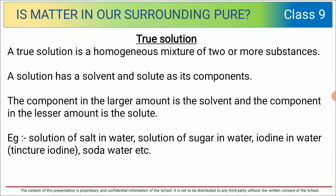Now let us talk about the true solution. A true solution is a homogeneous mixture of two or more substances. A solution has a solvent and solute as its components. The component in the larger amount is the solvent, and the component in the lesser amount is the solute. Examples include: solution of salt in water, solution of sugar in water, iodine in water, and soda water. These are all examples of true solution.